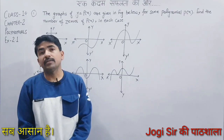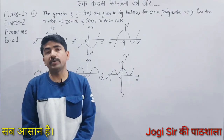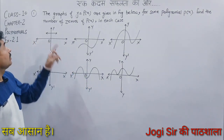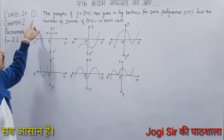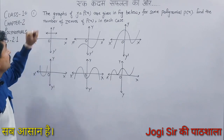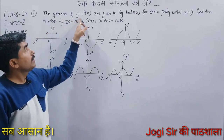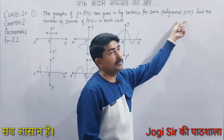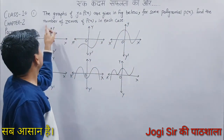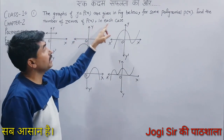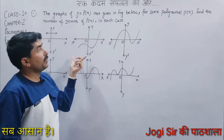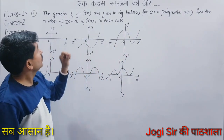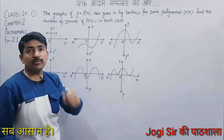We will start with Chapter 2, Polynomials of Class 10. This is Exercise 2.1, the first question. The graphs of y equal to px are given in the figure below for some polynomial px. Find the number of zeros of px in each case. Here we have some polynomials given, and we will determine the number of zeros.